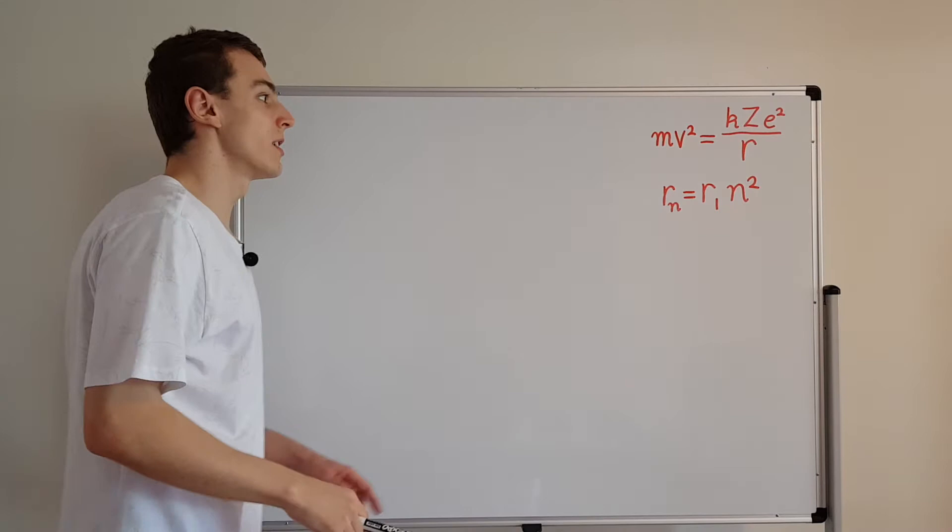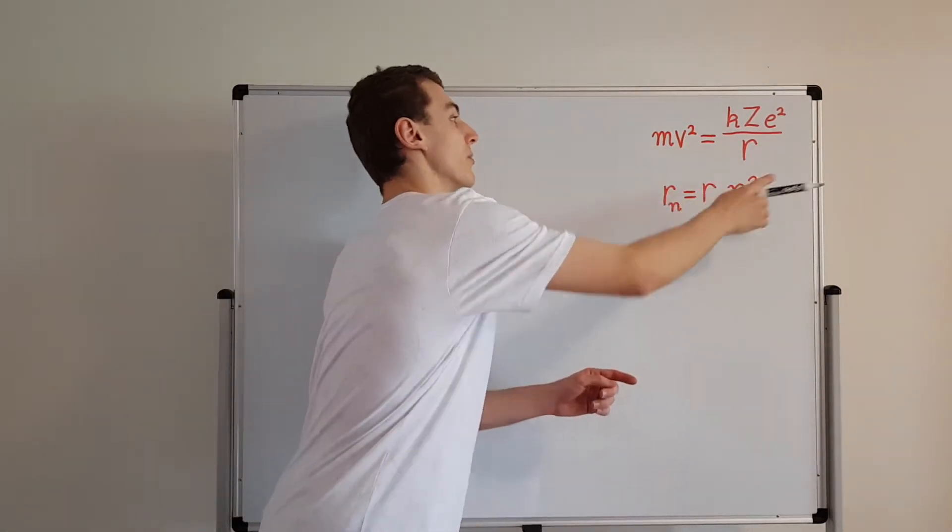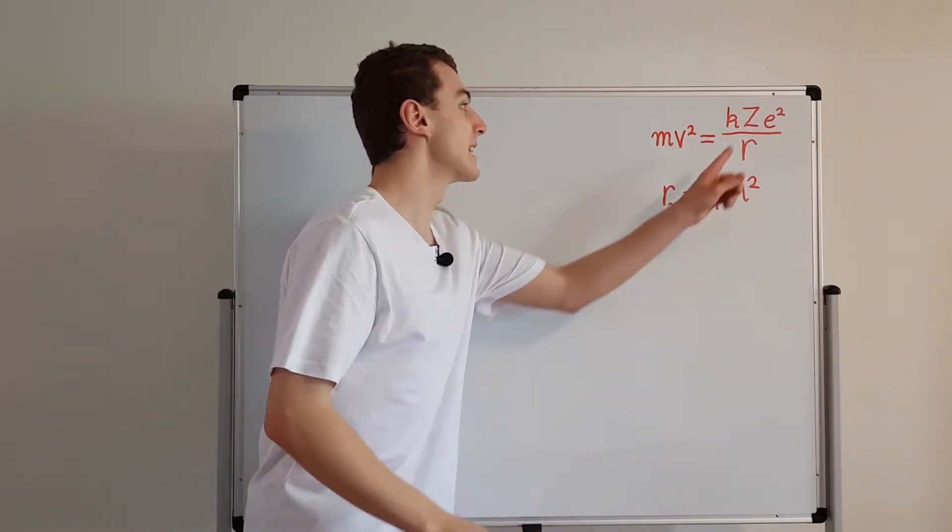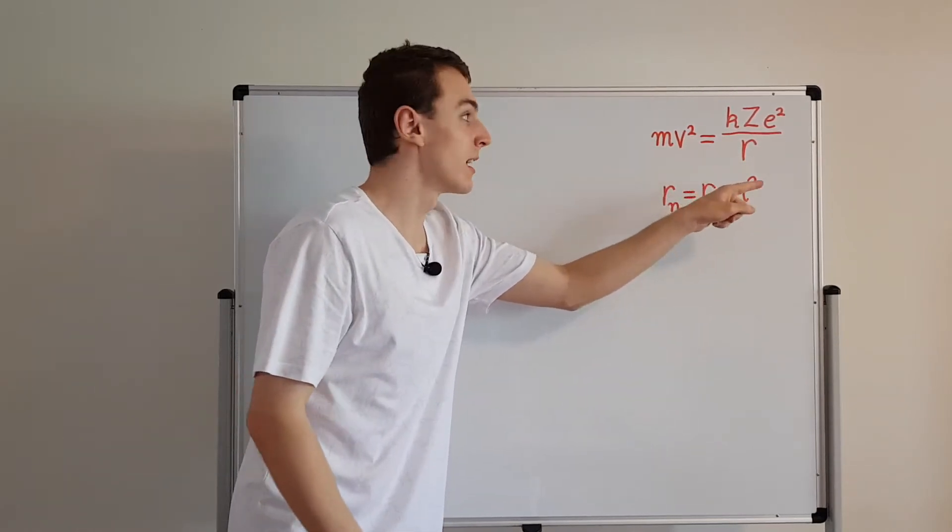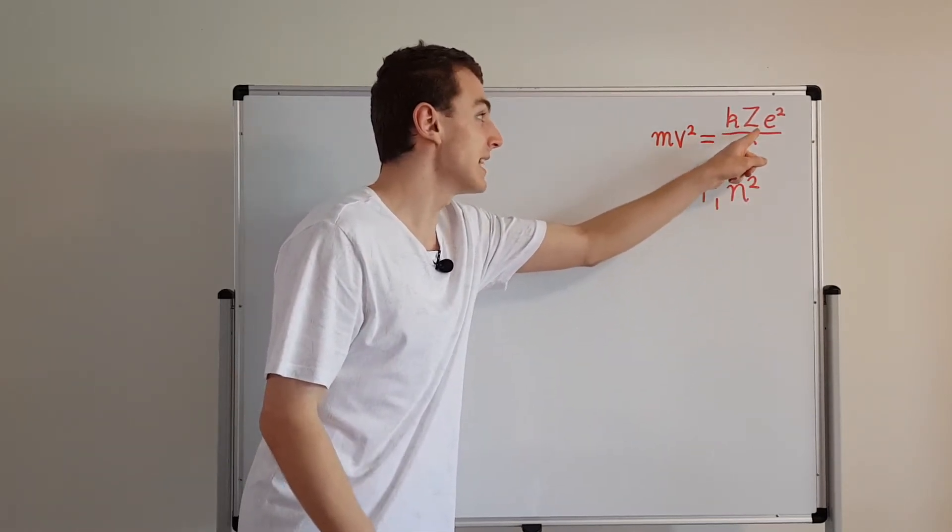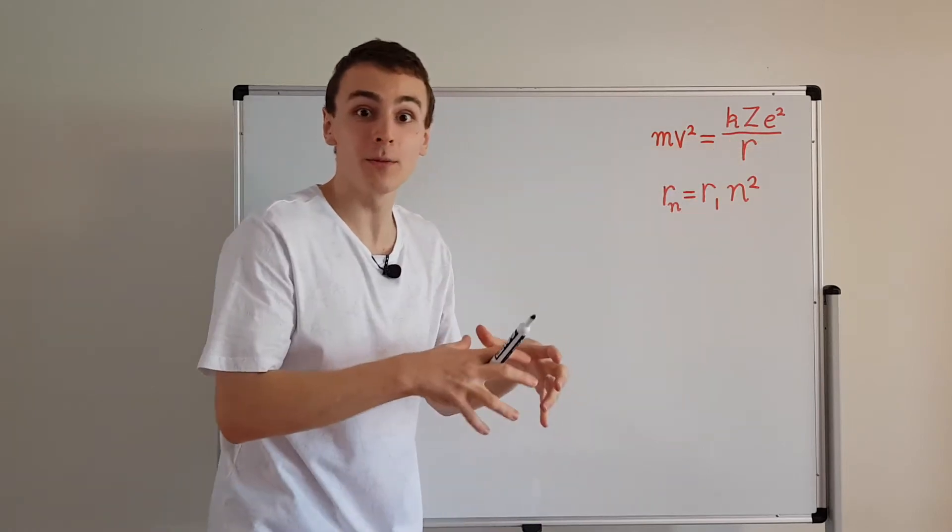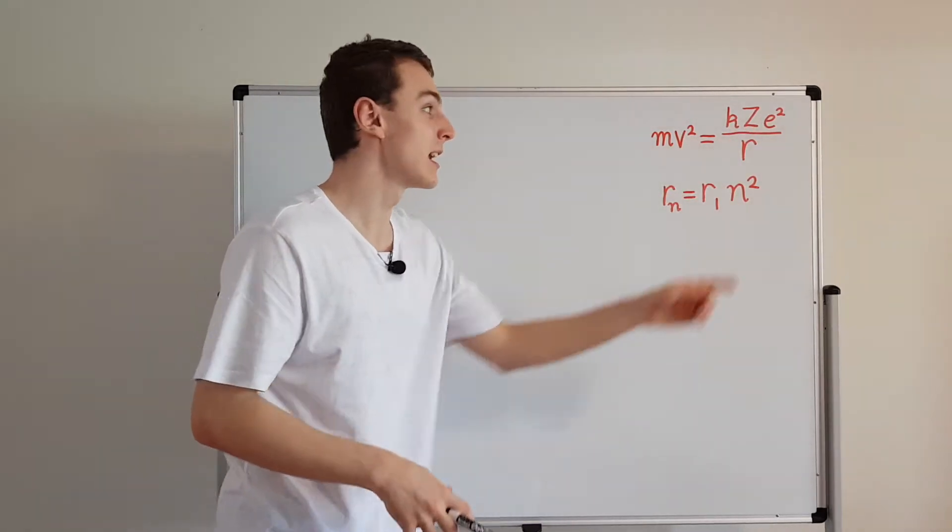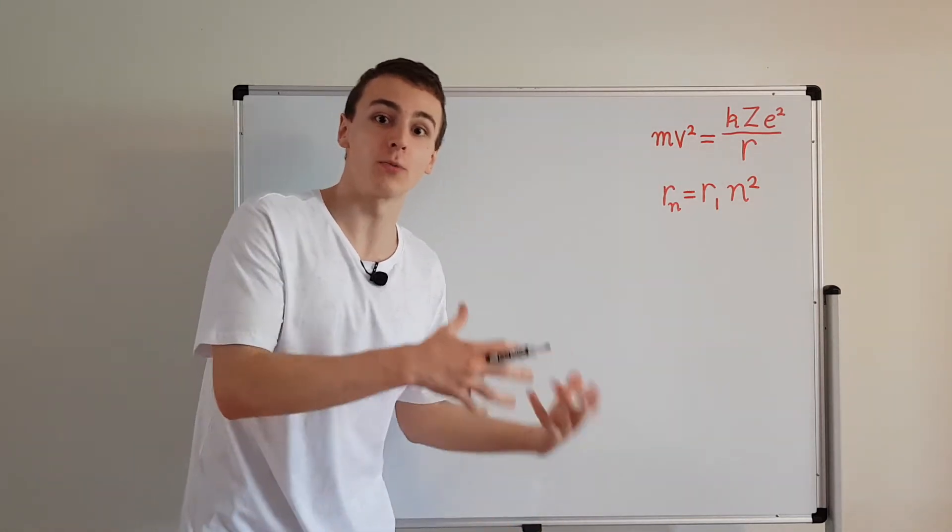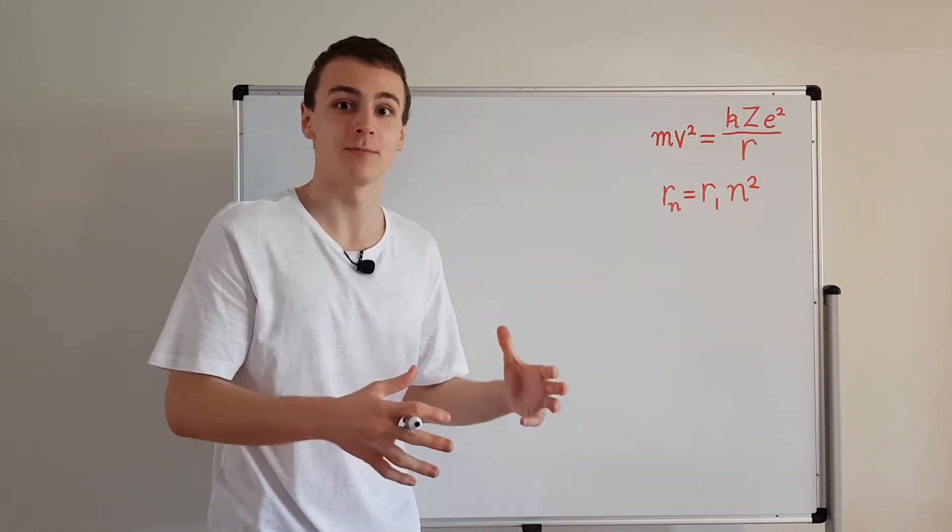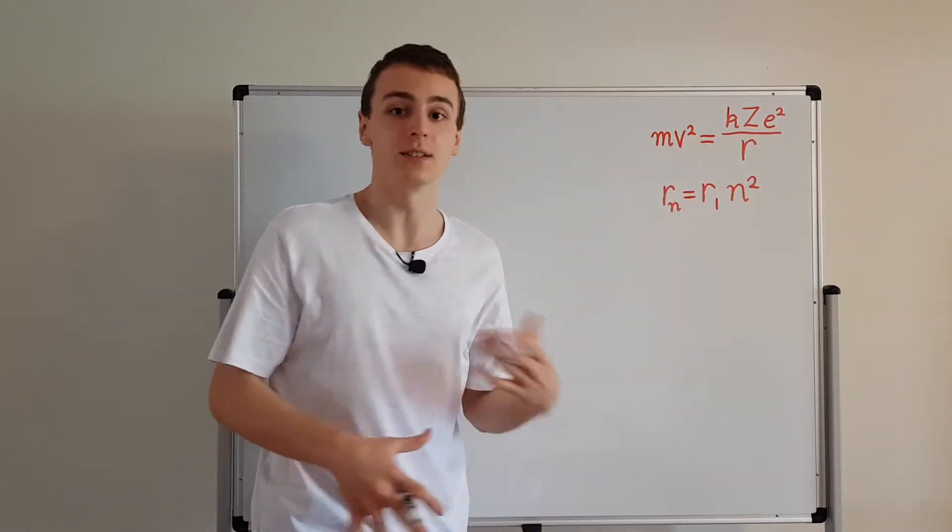Another thing that we derived was this relationship over here. mv squared is kZe squared over r. So r is the radius, k is Coulomb's constant, Z is the atomic number, how many protons are in the nucleus. And e is the charge on an electron. It's also the same as the charge on a proton. It's just a sign difference. And because we're squaring it, it doesn't matter.